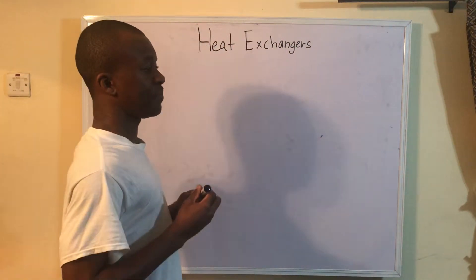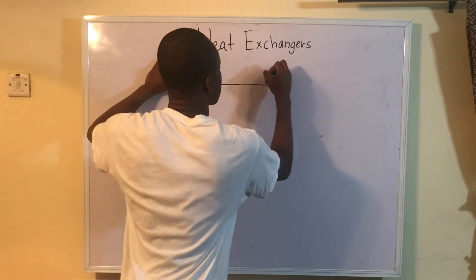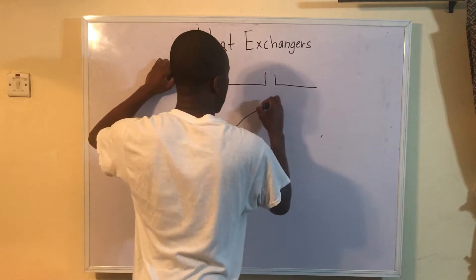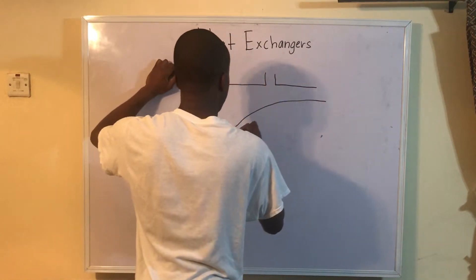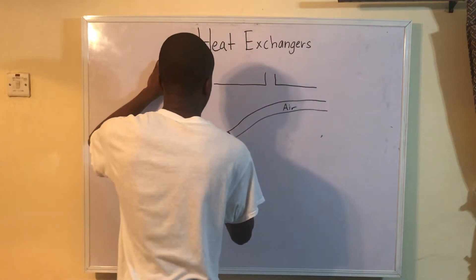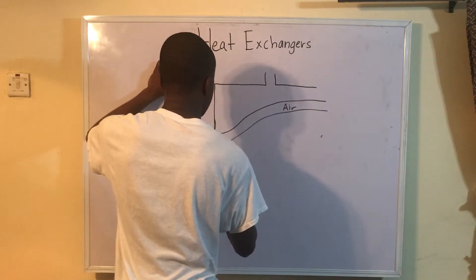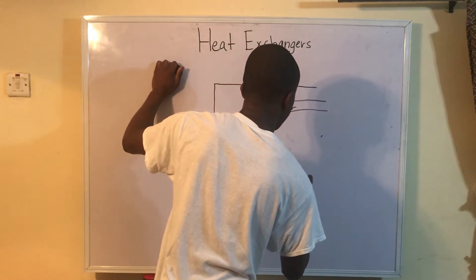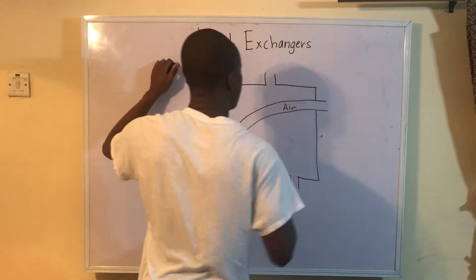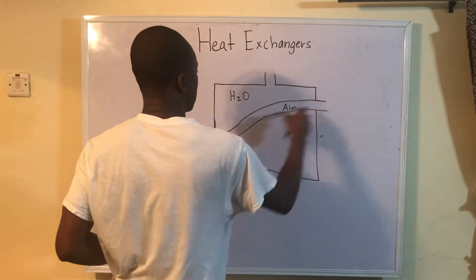Let's say we want to heat up air using water. We're going to get something that looks like this. We might run air through a pipe — this pipe is going to be full of air running through it, going in one direction. Then we're going to have a container holding water running through it, so we have an inlet and an outlet for our water, and an inlet and an outlet for our air.